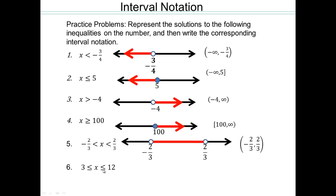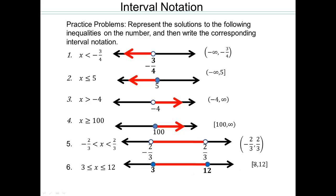For the interval from 3 to 12 inclusive: plot 3 and plot 12, both included, with everything in between. So the interval notation is square bracket 3 comma 12, square bracket.